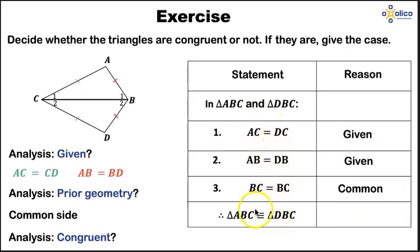So the triangles ABC and DBC are congruent because of the case side, side, side. That is how we show our reasoning to prove that the triangles are congruent. We have a look at what is given and what we know from prior geometry, and that helps us to prove.